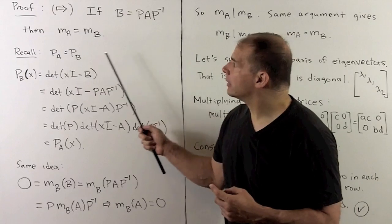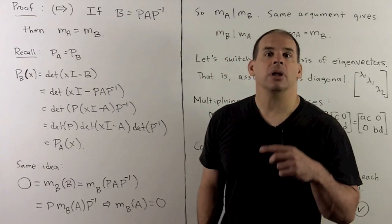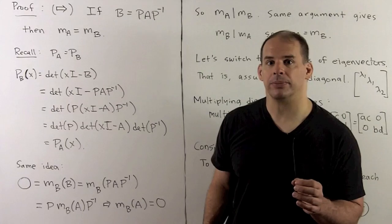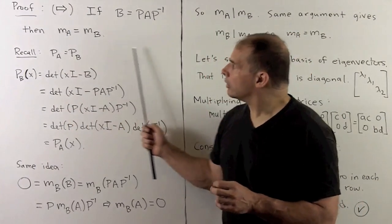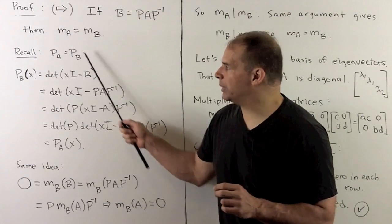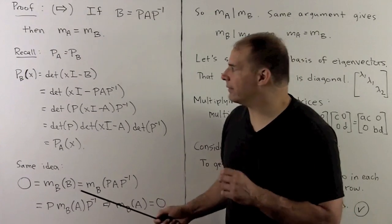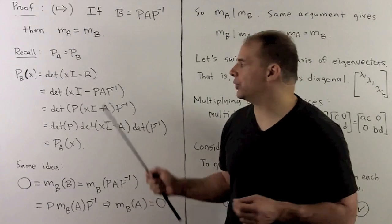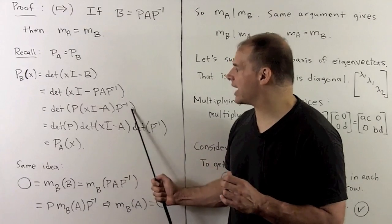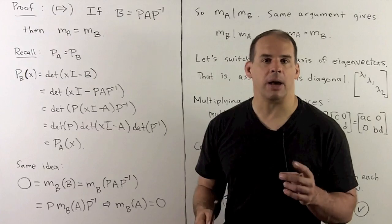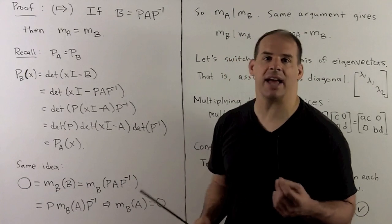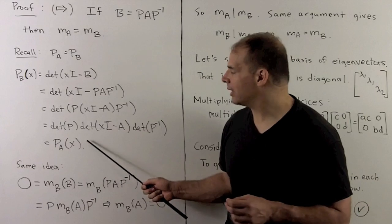Because MA equals MB, the minimal polynomial doesn't depend on the basis we're using — it's really a property of the original linear transformation. For warm-up, we show the same result for characteristic polynomials. The characteristic polynomial of B by definition is det(XI minus B). We substitute, factor out P and P inverse, use the multiplicative property of the determinant, and the determinants of P and P inverse cancel to give one, leaving us with the characteristic polynomial of A.